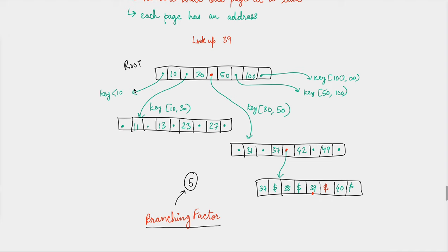The branching factor is not just three, four, or five — it's in the hundreds generally. If you have a branching factor of 500 and a depth of four, you can store up to 256 terabytes of data. That means for 256 terabytes of data, at most you read the root node plus four levels — so four disk I/O operations. If the leaf node has pointers to the value, one more read. From 256 terabytes of data, you're only doing a few reads.